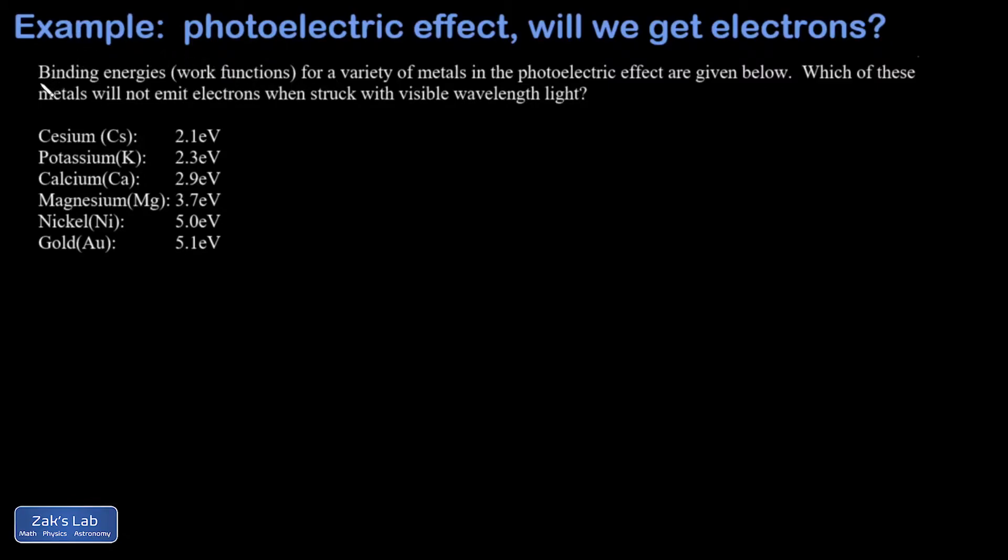That's called the binding energy or the work function for that metal. We're given this list of six different metals and their associated binding energies or work functions listed from least to greatest.